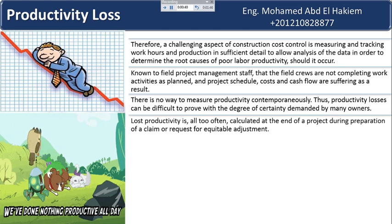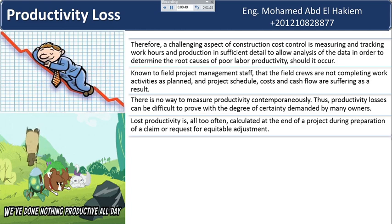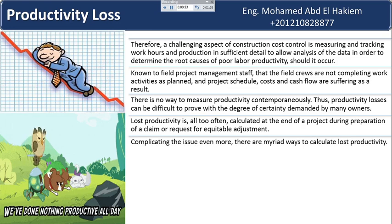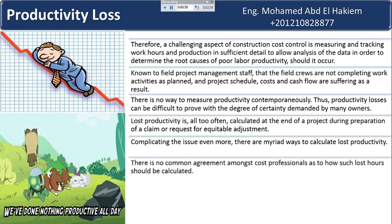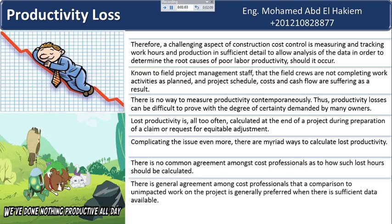Lost productivity is, all too often, calculated at the end of a project during preparation of a claim or request for equitable adjustment. Complicating the issue even more, there are myriad ways to calculate lost productivity. There is no common agreement amongst cost professionals as to how such lost hours should be calculated, though there is general agreement that a comparison to unimpacted work on the project is generally preferred when there is sufficient data available.